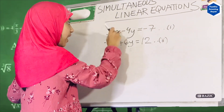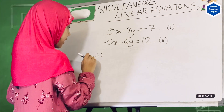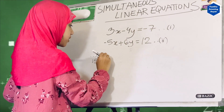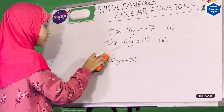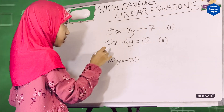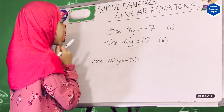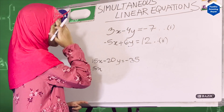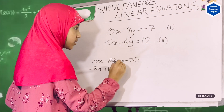If we multiply equation 1 by 5, then that would be 15x minus 20y equals minus 35. And for equation 2, we multiply by 3 — because multiplying by 5 would give 25, not 15 — so multiplying by 3 gives minus 15x plus 18y equals 36.